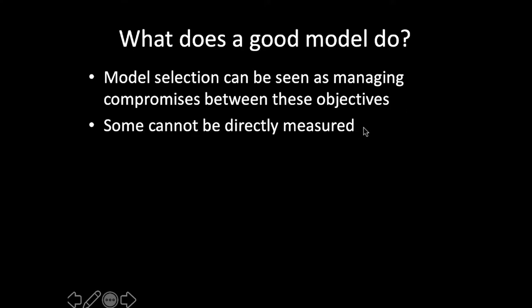It's unlikely that any given model is going to maximize all of those objectives at once. As a result, you need to be clear on what the most important aspects of performance are and evaluate your models appropriately. One issue is that some of those things cannot be directly measured for real species. If we're talking about feature selection, figuring out which predictors are most important to your species, in many cases you can't really validate your model against physiological experiments that would tell you whether it's max temperature or mean temperature that's actually driving things.